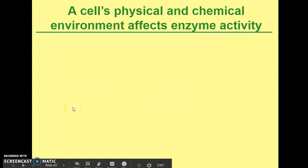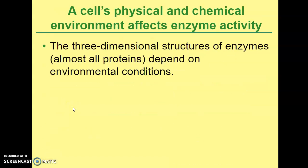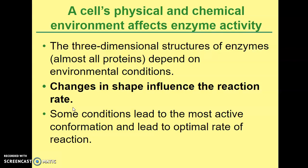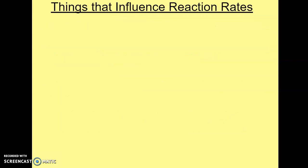A cell's physical and chemical environment affects enzyme activity. The 3D structure of an enzyme depends on its environmental conditions, and any changes in the shape can also influence the rate of reaction of the enzyme. Some conditions lead to the most active conformation and lead to the optimal rate of reaction.